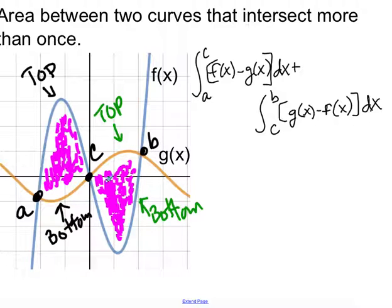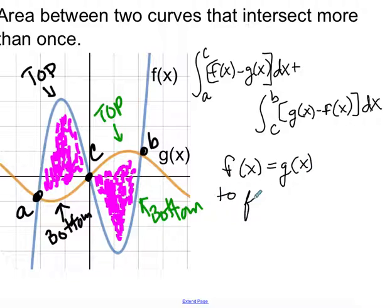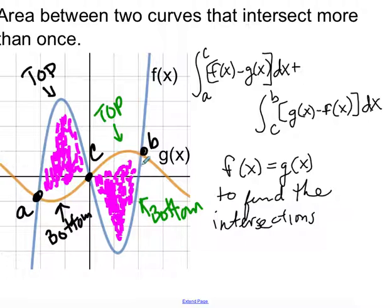You'll need to find the values of a, c, and b by setting f(x) equal to g(x) to find the intersections. I hope this helps with finding the area between a curve and the x-axis, or the area between two curves.